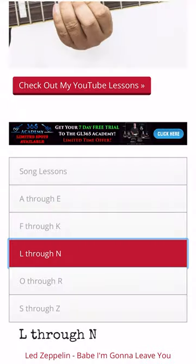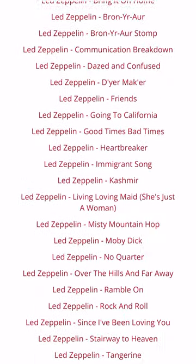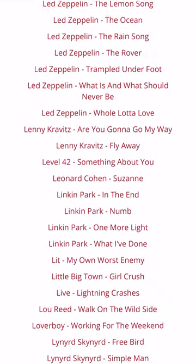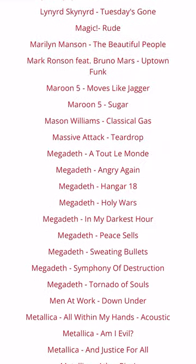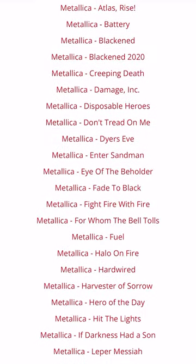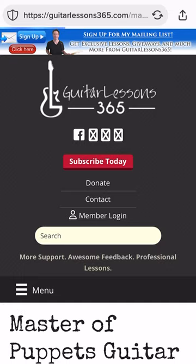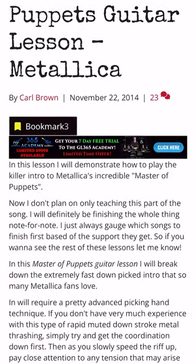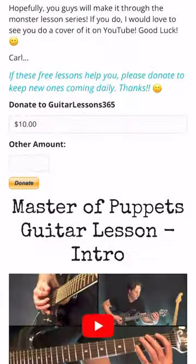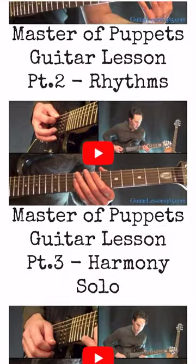For instance, if you want to find some Metallica songs — which I have plenty of — just go to the L through N section, then scroll down until you get to the Metallica lessons. There are almost 60 of them there. Just click on whatever lesson you want and you'll open up the page with all the videos I have for that lesson.